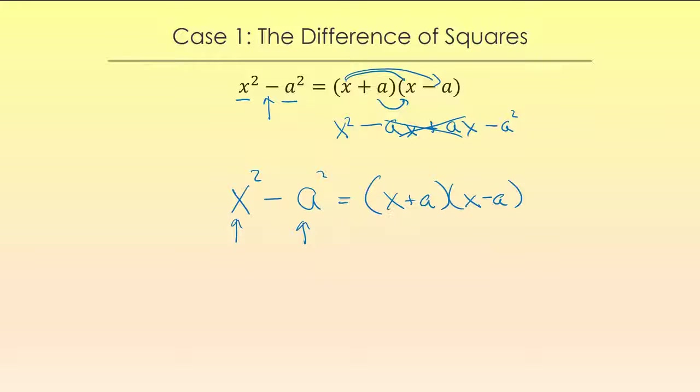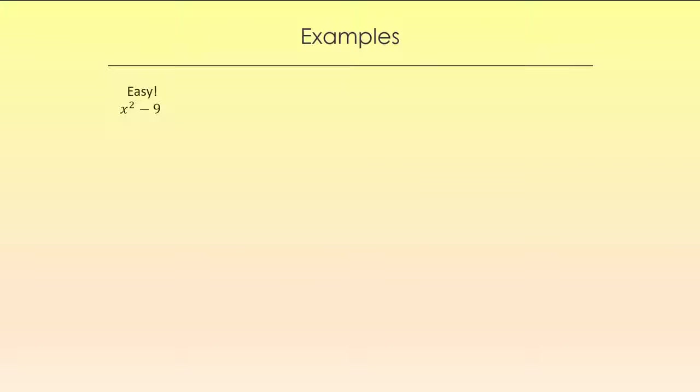Let's look at some examples. This one is easy. You can really readily tell what got squared. Obviously it was an x that got squared for the first term, and then what do you square to get nine? Three. So this is three squared.